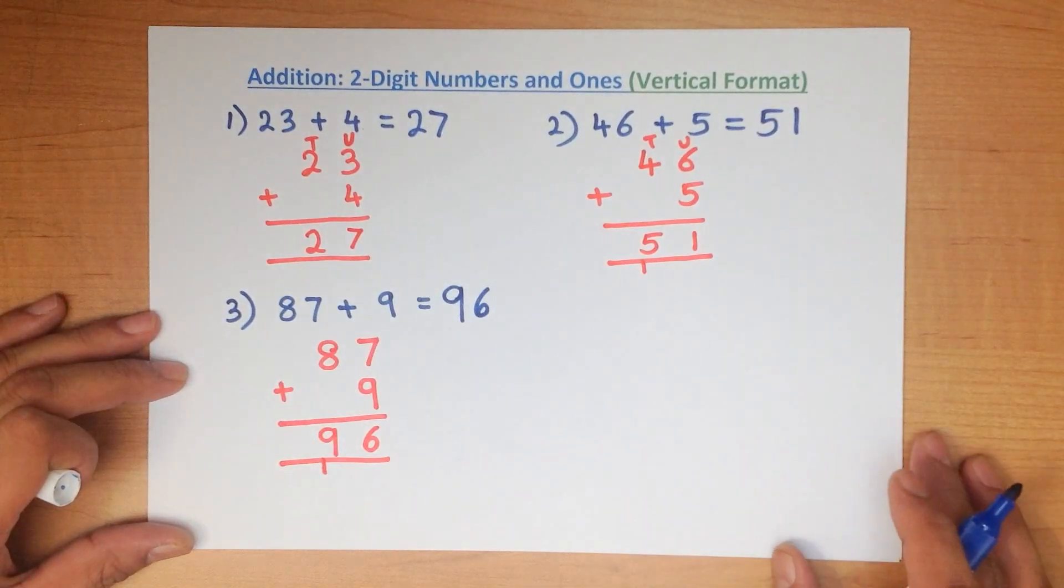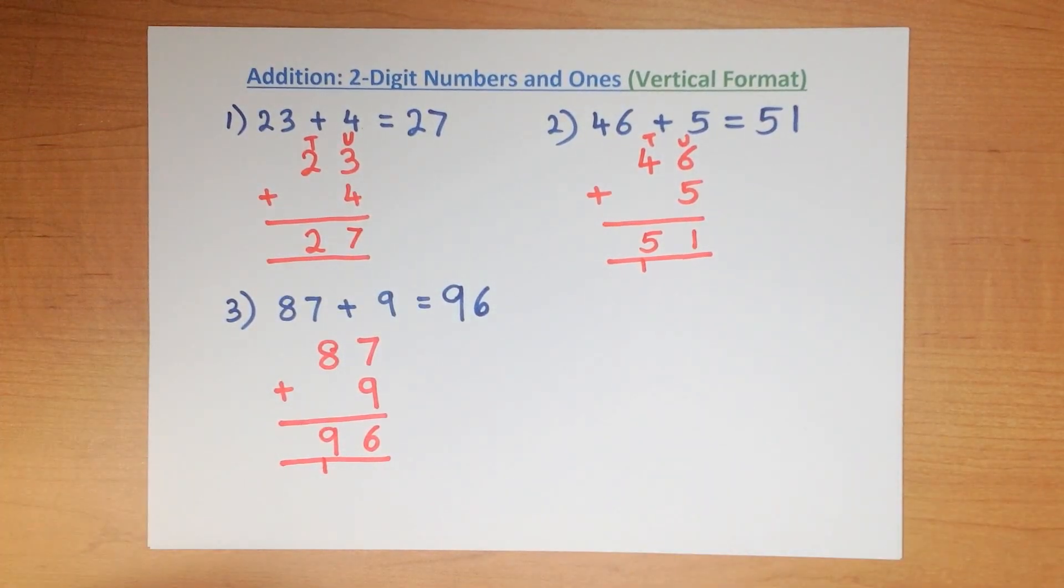And that is addition of two digit numbers and ones using the vertical format.